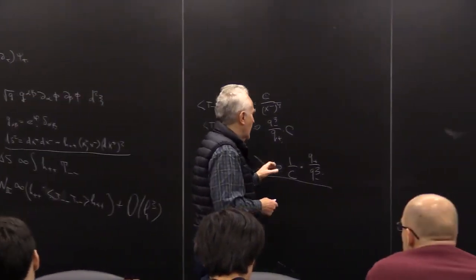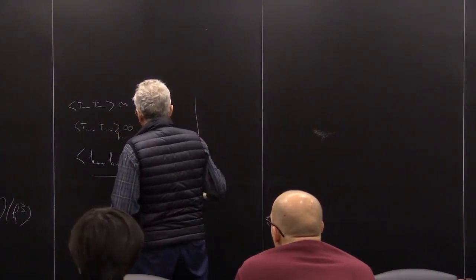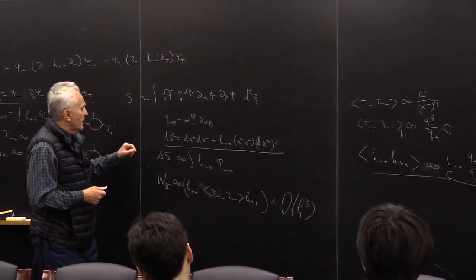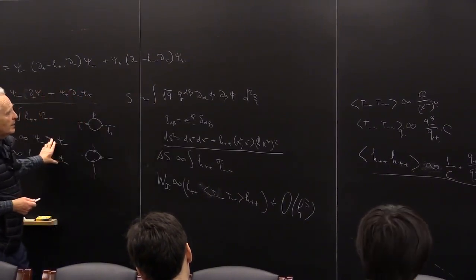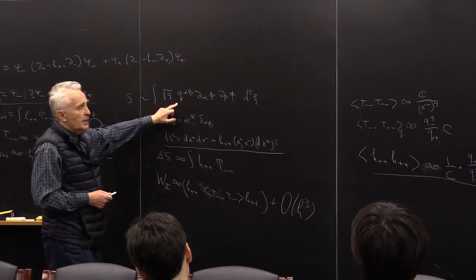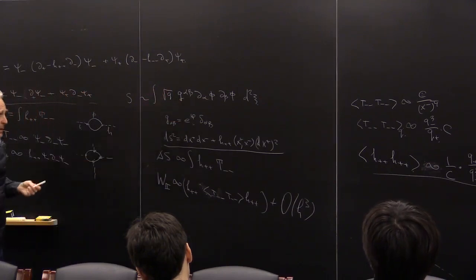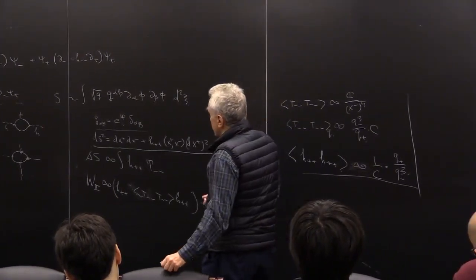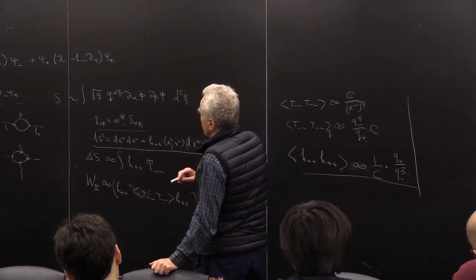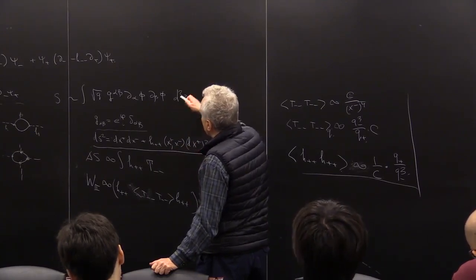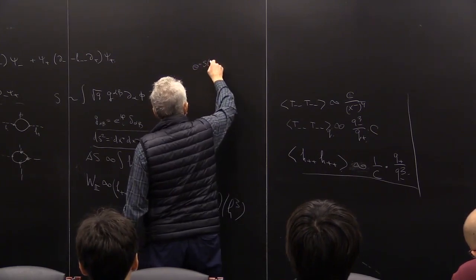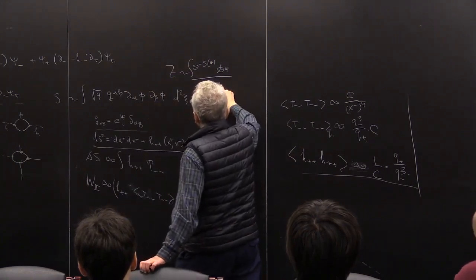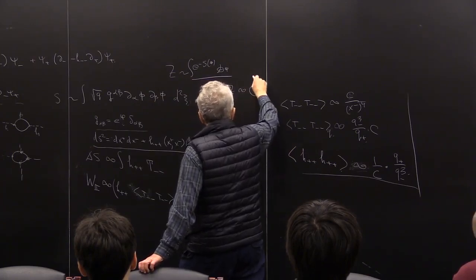Before we come to that question, I left unfinished an important point from last time: in the conformal gauge, we don't see the interaction with gravity — it looks as if it is absent. The resolution is that when we calculate the functional integral, the log Z is this loop we discussed. Let's take a brief look at this loop.